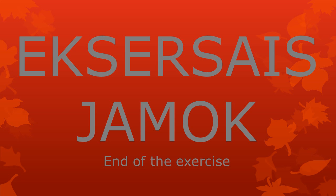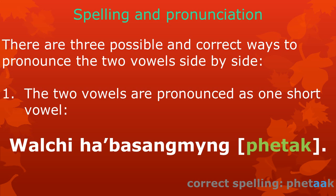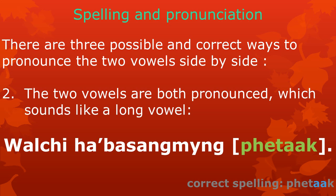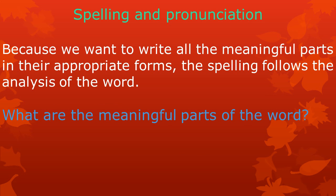Exercise summary. So, to repeat: when one meaningful part ends with a vowel and the next meaningful part starts with the same vowel, then two of the same vowels are written directly next to each other. In a word like this, there are three possible and correct ways to pronounce two vowels side by side: as a short vowel, as a long vowel together, or with a raqa in between them. Because we want to write all the meaningful parts in their appropriate forms, the spelling follows the analysis of the word.